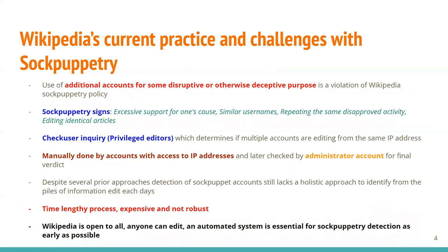Currently, use of multiple accounts for disruptive purposes is a violation of Wikipedia's sock puppetry policy. Signs include support for one cause, similar usernames, etc. There is a CheckUser inquiry system where a user complains about an account being a sock puppet, which is then manually checked by privileged editors and pushed to an administrator for a final verdict. But this is a very lengthy, expensive, non-robust, and manual process. Since Wikipedia is open to all, an automatic detection system is essential.